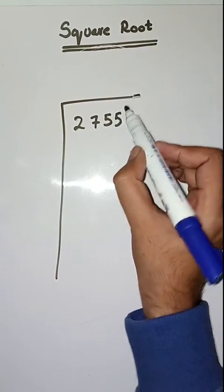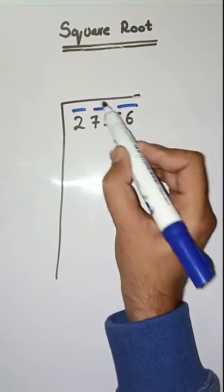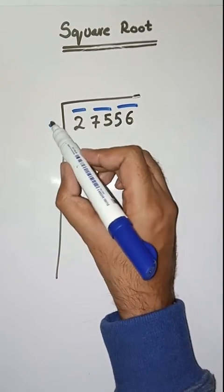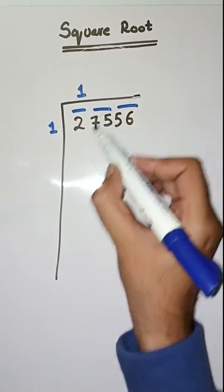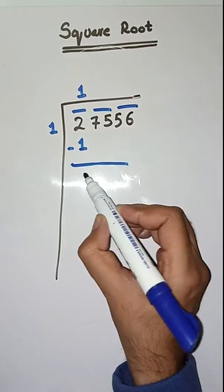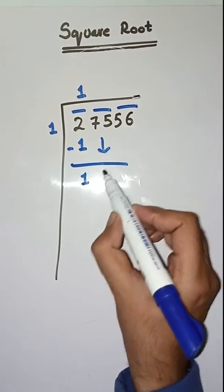From right to left like this: 56, 75, and 2. So first we have to solve 2. We take a number 1. One times one is one, minus that we get one. Next 75 is coming down. Here we will do 1 plus 1 which is equal to 2. Now we will take a number 6.